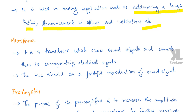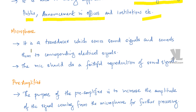Talking about the microphone — it is a transducer which senses the sound signal and converts it to a corresponding electrical signal. A transducer is an energy converting device; it converts one form of energy to another. The microphone converts sound signals into corresponding electrical signals.